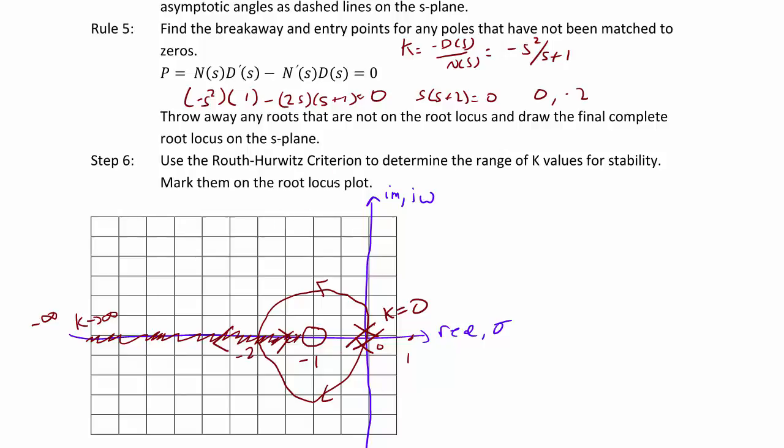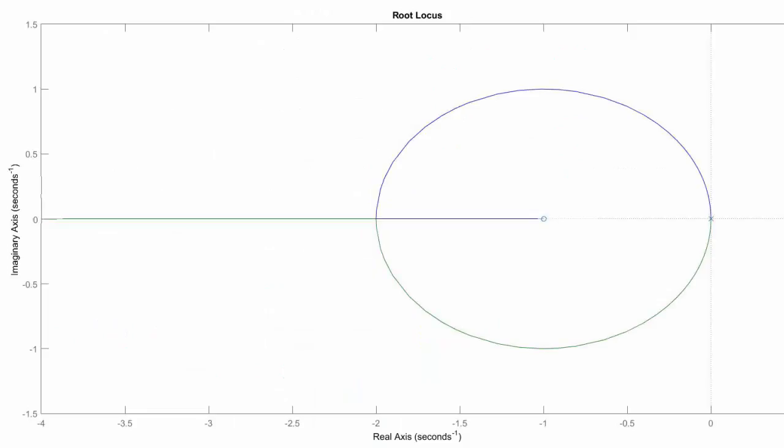Step 6 is to use the Routh-Hurwitz criterion to determine the range of k values for stability and mark them on the root locus plot. And we're going to do this by looking at the MATLAB-generated root locus sketch. All right, here's our root locus generated in MATLAB.